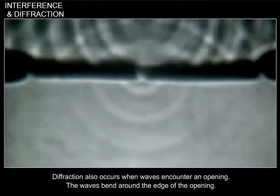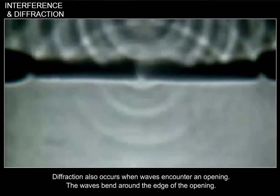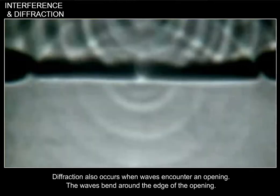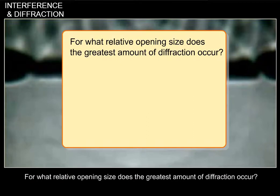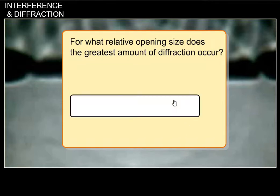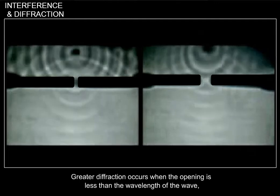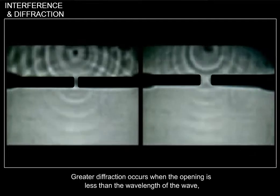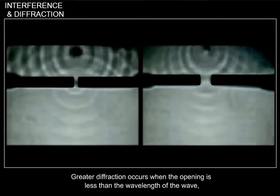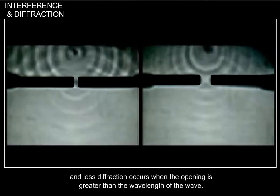Diffraction also occurs when waves encounter an opening. The waves bend around the edge of the opening. For what relative opening size does the greatest amount of diffraction occur? Correct. Greater diffraction occurs when the opening is less than the wavelength of the wave, and less diffraction occurs when the opening is greater than the wavelength of the wave.